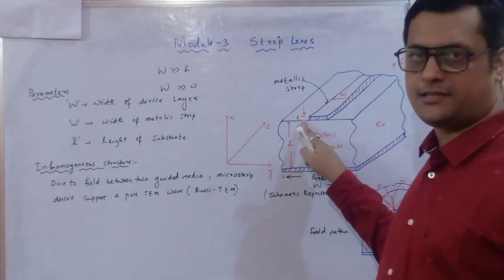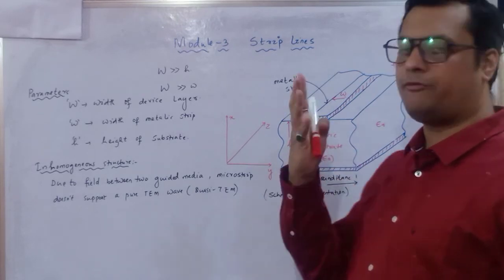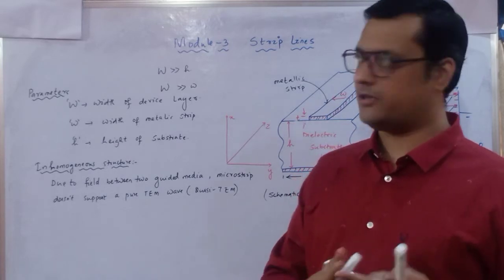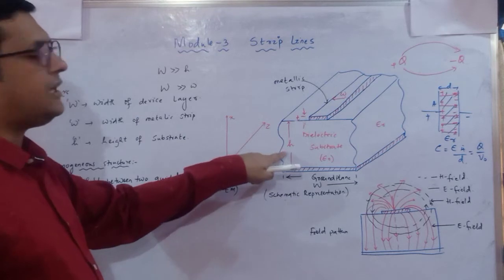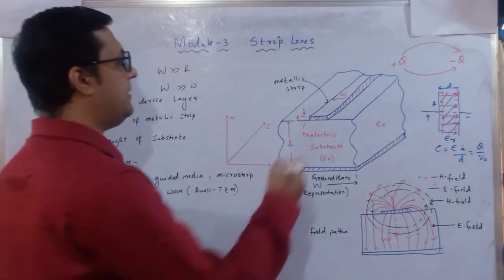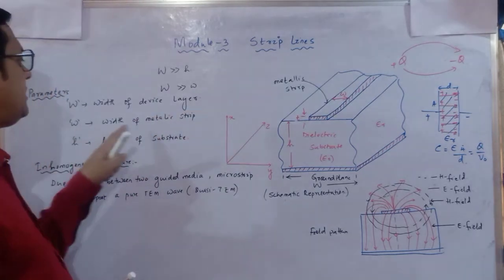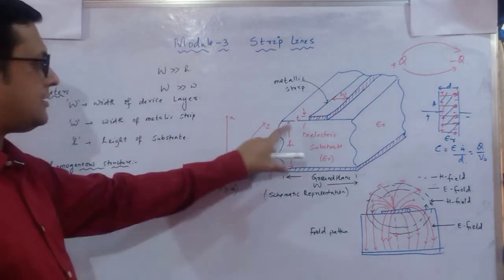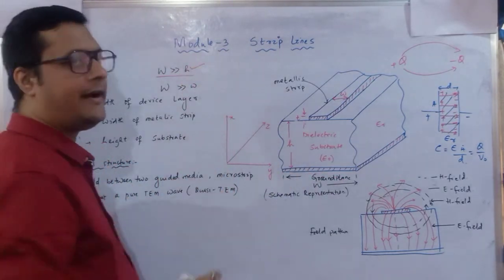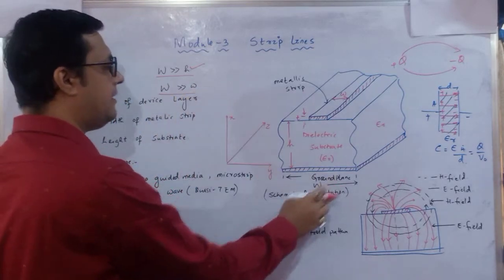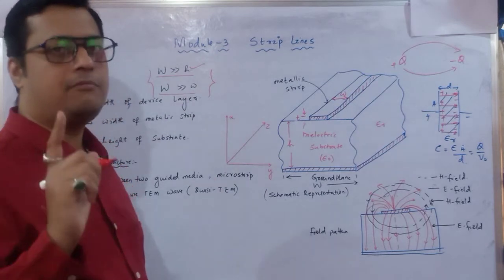There are four parameters: width of the strip (small w), thickness of the strip (t), height of the dielectric substrate (h), and width of the ground plane (capital W). Capital W is the width of the device, which must be much greater than h and much greater than the width of the metallic plate (small w). These two conditions must be satisfied for a microstrip line.